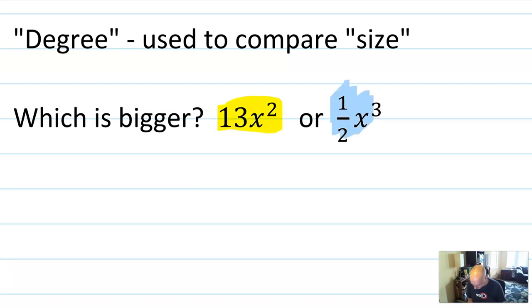The reason we introduced this new term is because if I'm looking at two polynomials, 13 x squared or 1 half x cubed, and I say, which is larger? Someone who is not thinking super hard might say, well, obviously 13 x squared is larger.